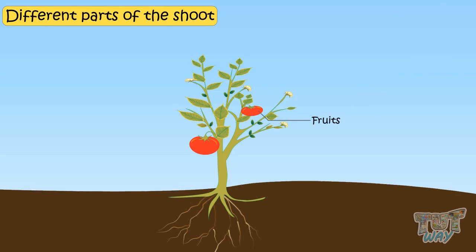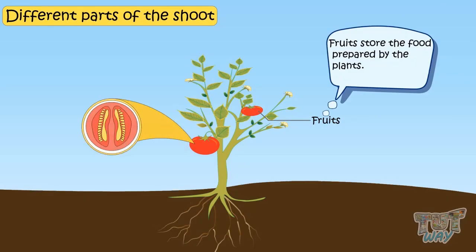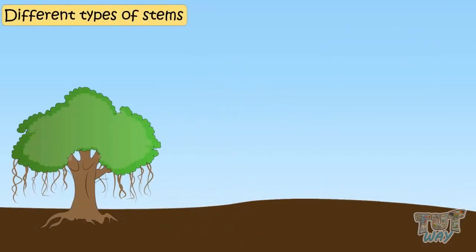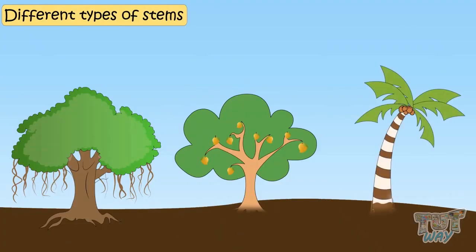Fruits. Fruits store the food prepared by the plants and also enclose seeds within them. Different types of plants have different types of stems.